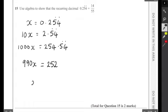And now x is going to be equal to 252 divided by 990. And if I stick that fraction into my calculator, I suspect it's going to be the same fraction as 14 out of 55.